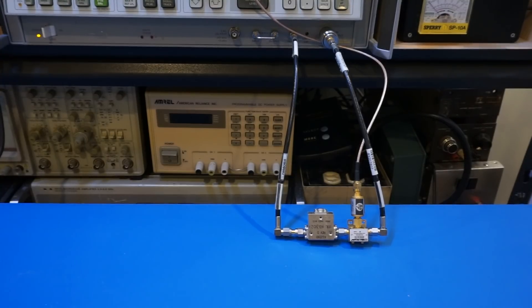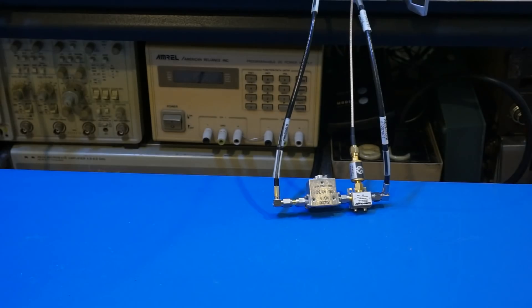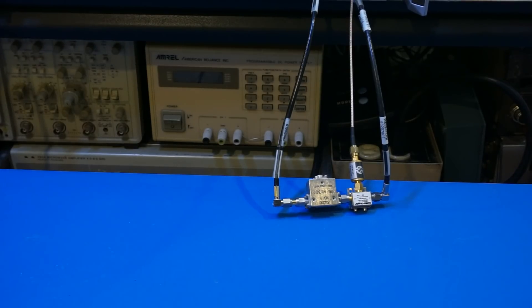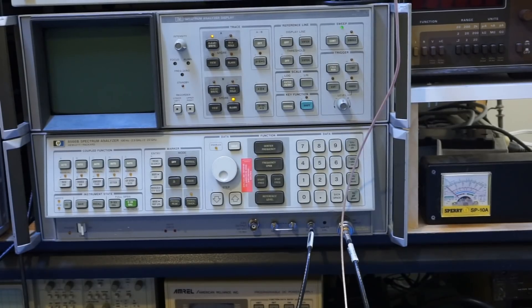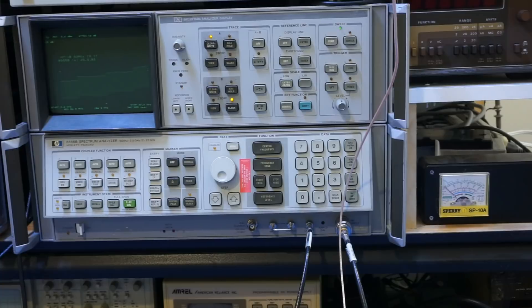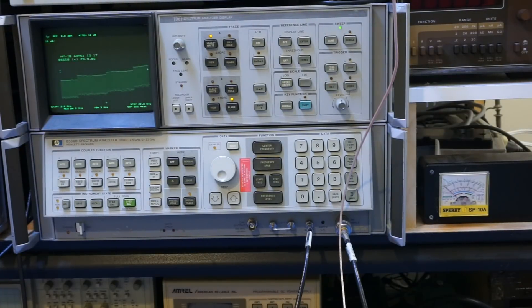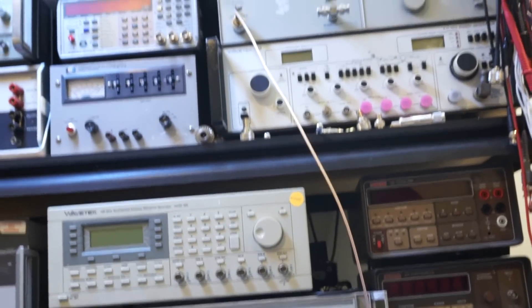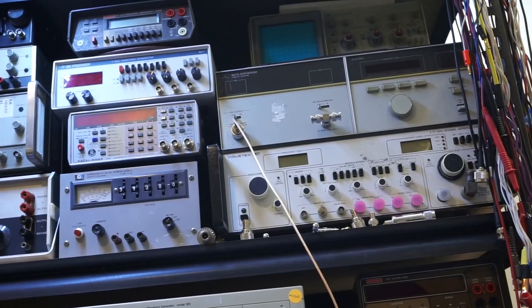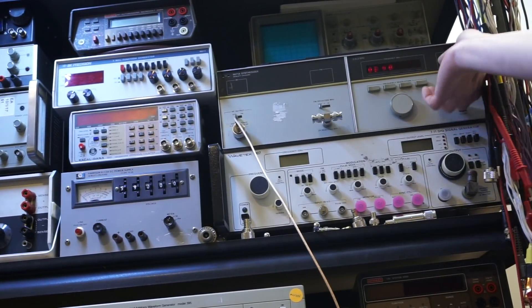The clock of this 8566B spectrum analyzer and that 8671A synthesizer are actually locked. So I use a cable to take the output from this spectrum analyzer and feed it directly into the 10 MHz reference clock input of the 8671A. So they are perfectly in sync. Okay, so now let's turn on the 8566B spectrum analyzer. Let me just show you the spectrum analyzer.